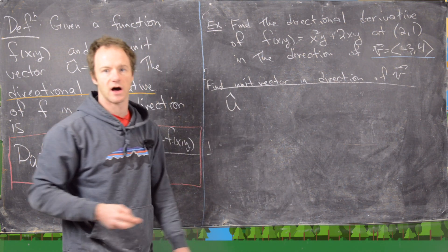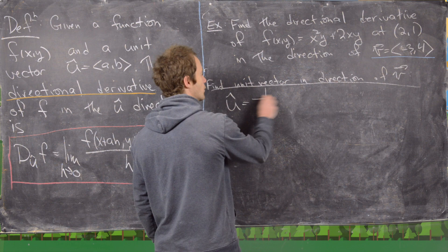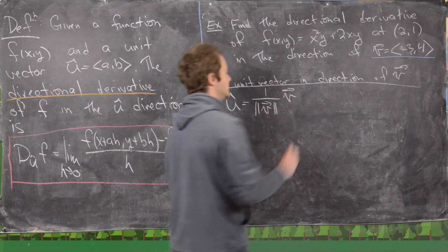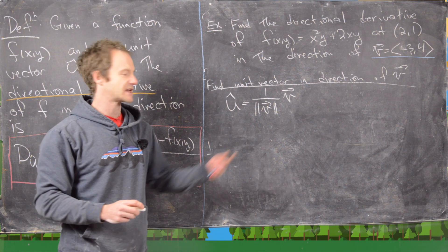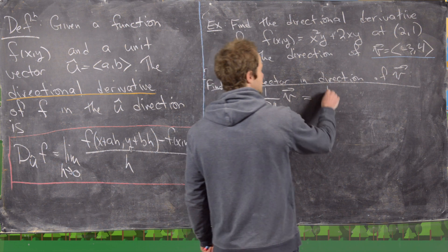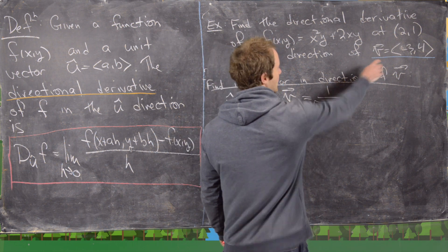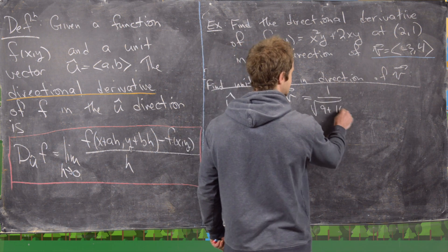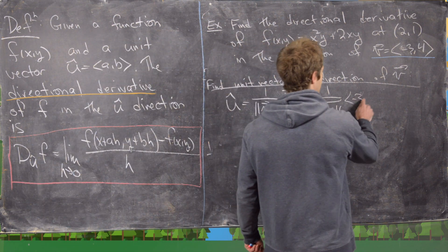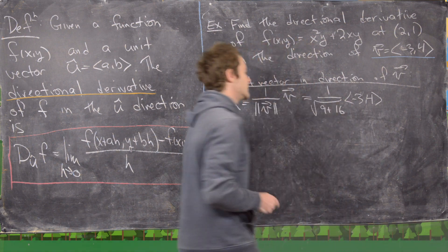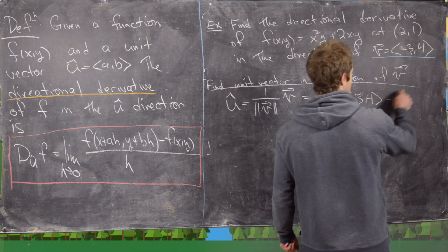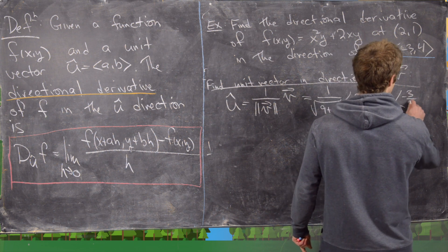To find a unit vector in the direction of v, we let û = (1/|v|)·v. That gives us 1 over the square root of (-3)² + 4² equals 1 over the square root of 9 plus 16, which is 1 over root 25, equals one-fifth. So û = (-3/5, 4/5).